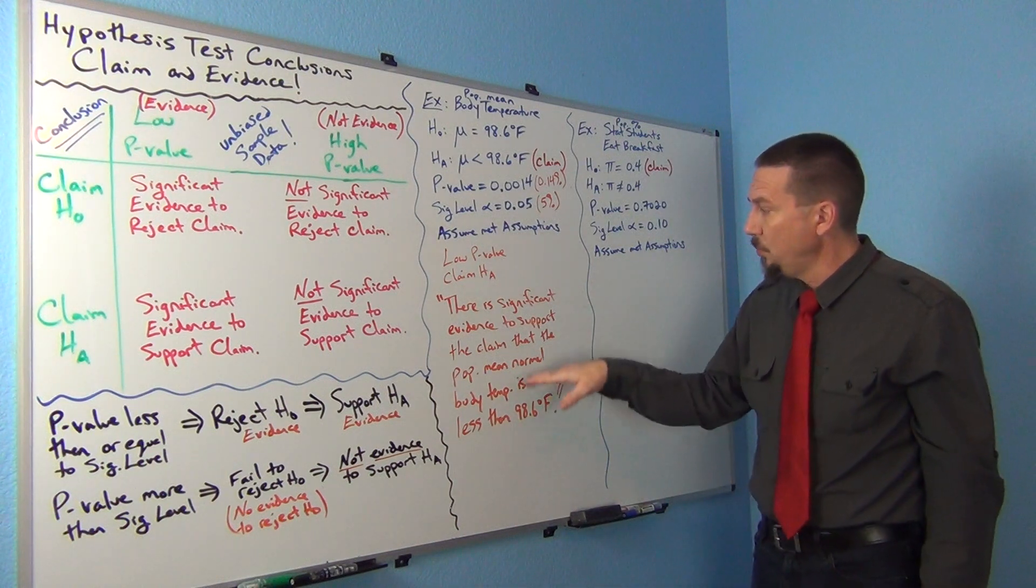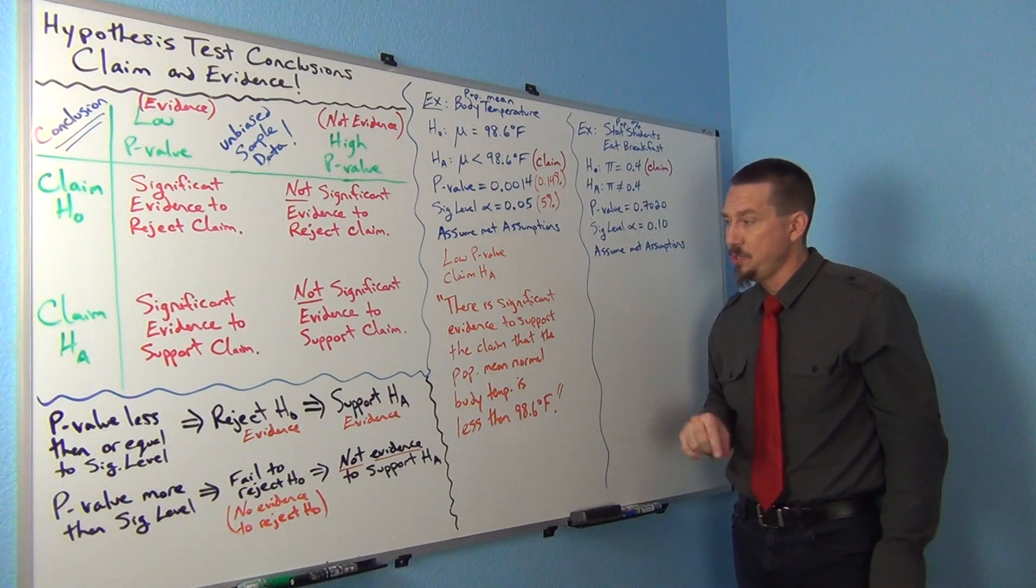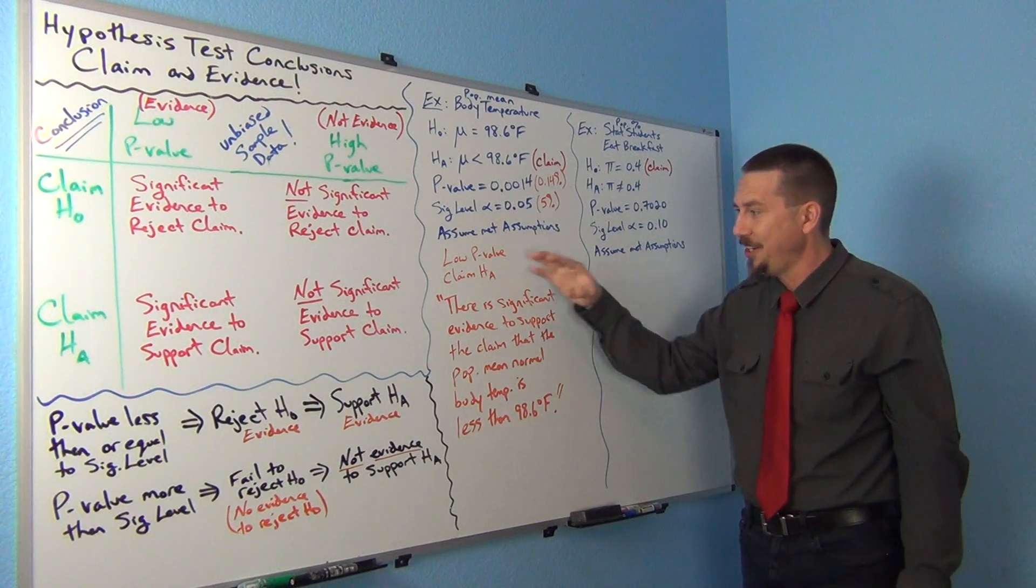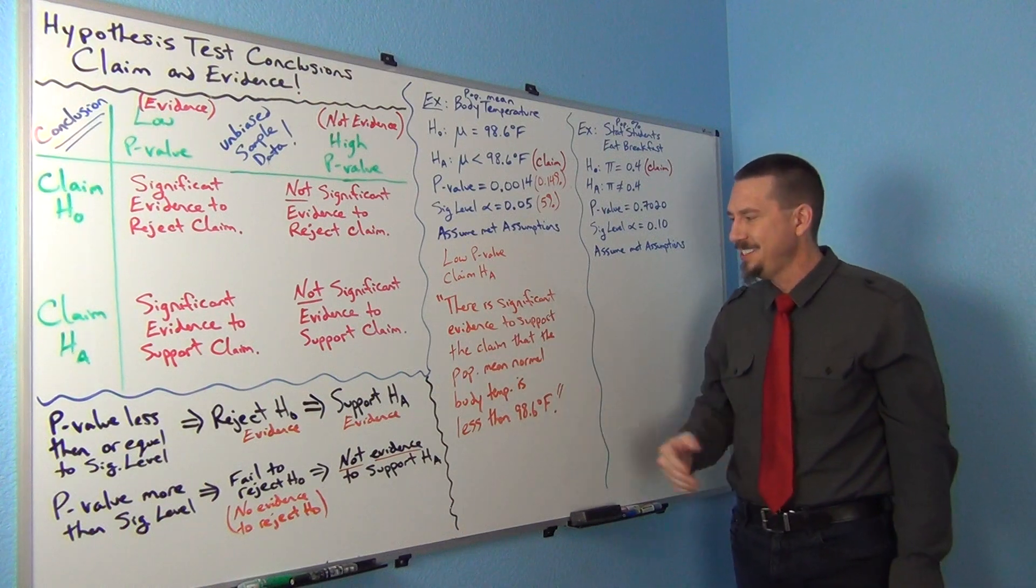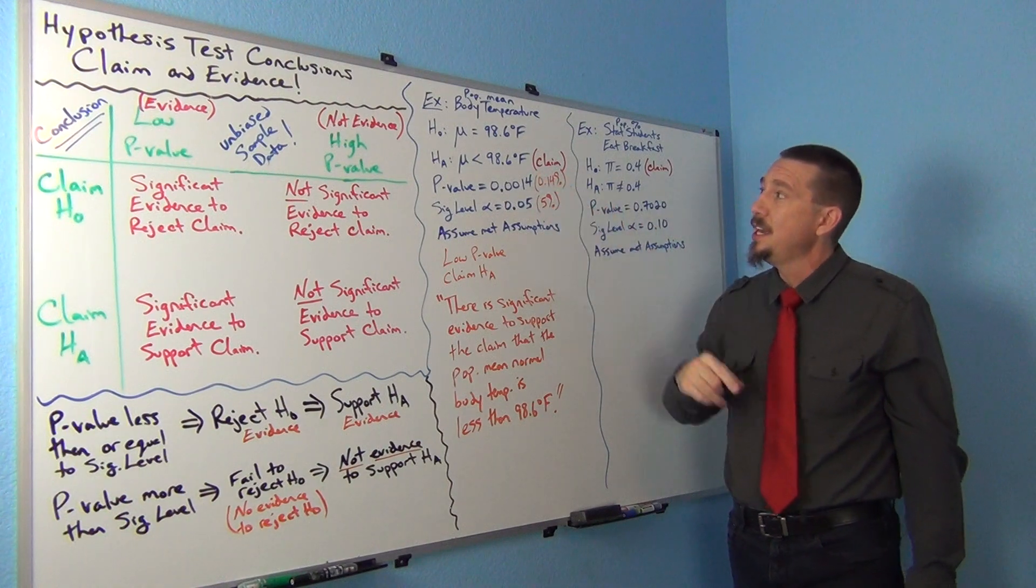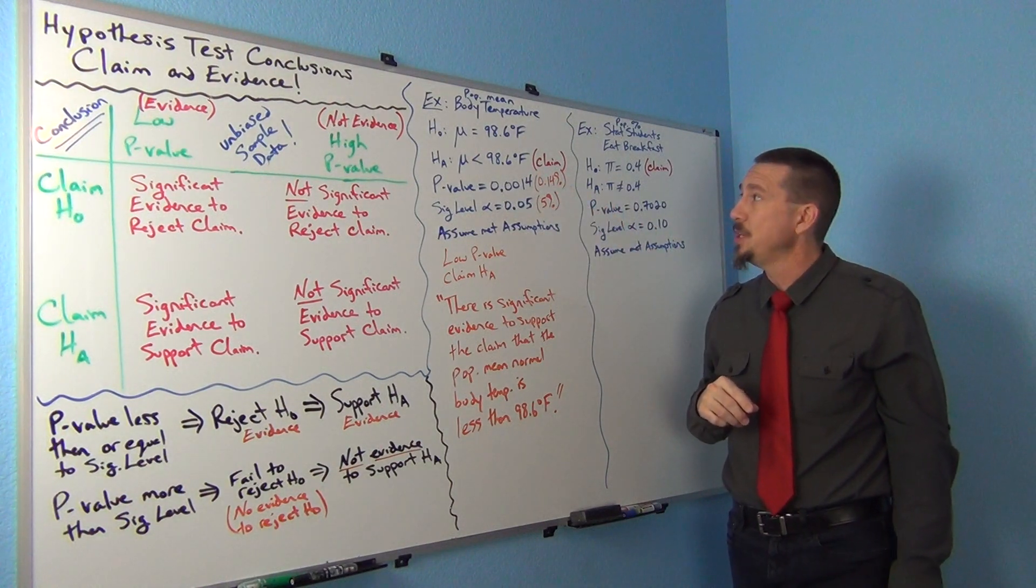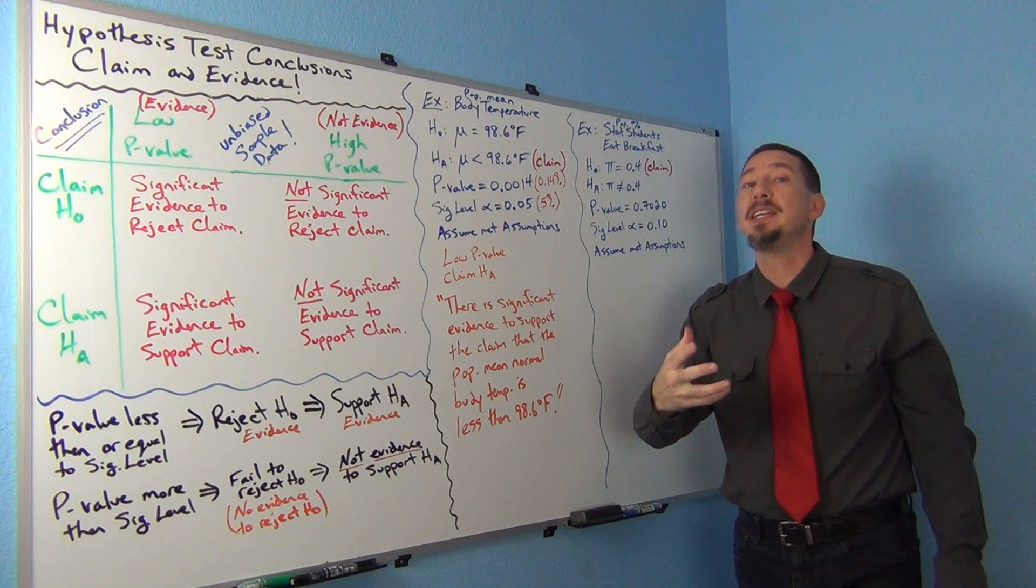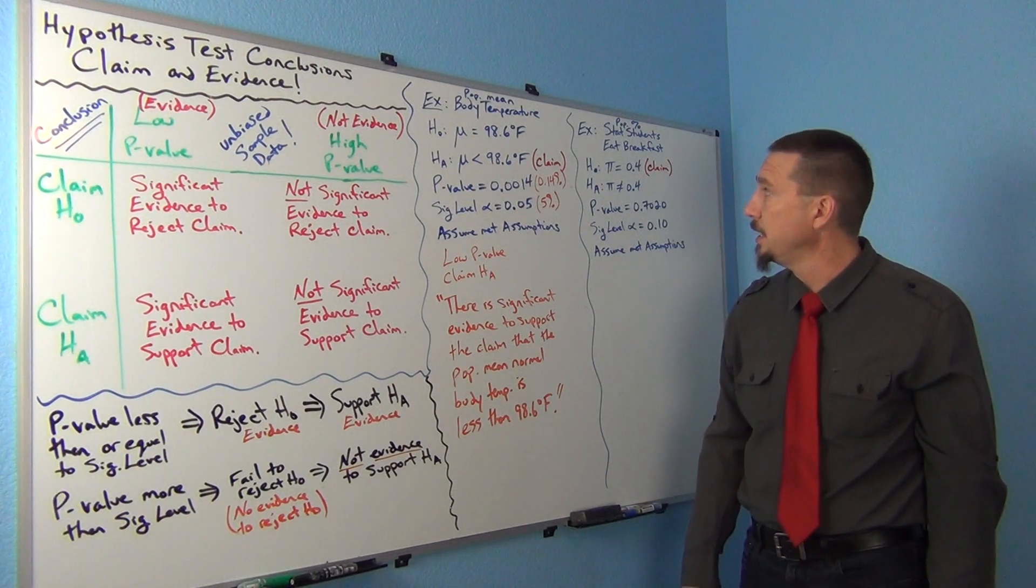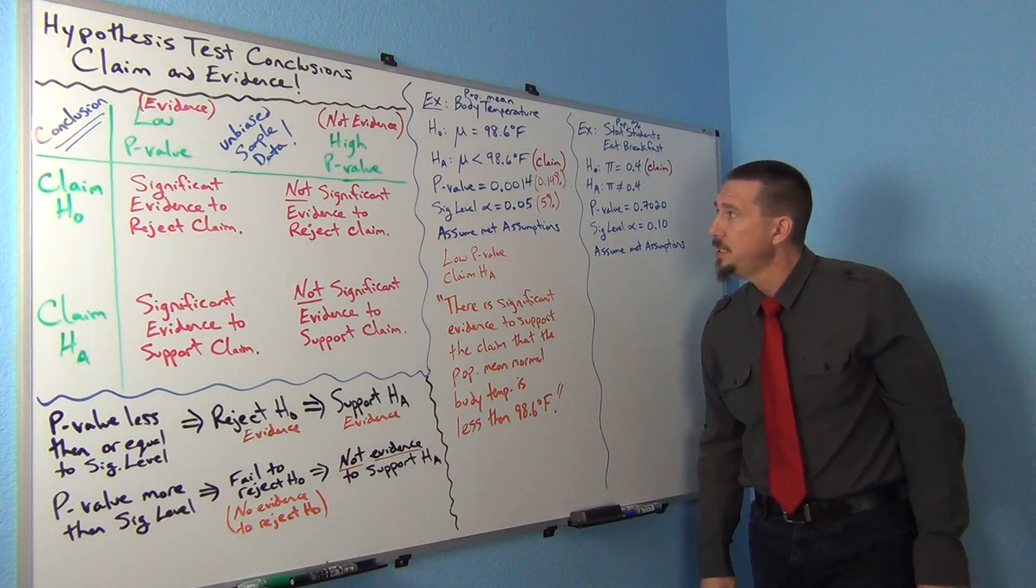So it's always good to write what the claim was there so people understand what you're saying. So again, what does this mean? It looks very statistics jargon, right? It looks very weird, how we write things in stats. You're basically saying that we agree with the scientists. We agree with the scientists that normal body temperature is less than 98.6, and we have some evidence to back up that scientist. That's kind of the idea behind it.